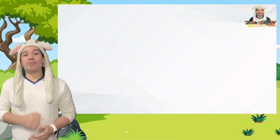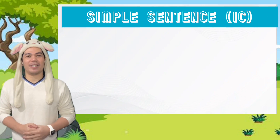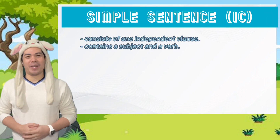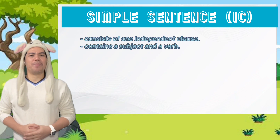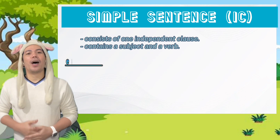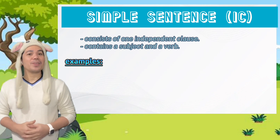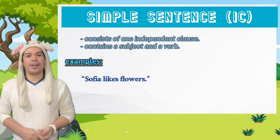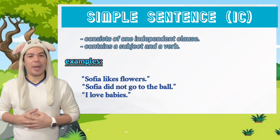Our first type of sentence structure is the simple sentence. It consists of one independent clause and contains a subject and a verb. A few examples of simple sentences are: "Sophia likes flowers," "Sophia did not go to the ball," and "I love babies."